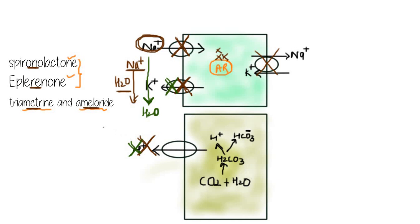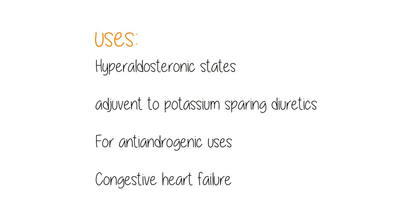Now let's look at the conditions in which potassium sparing diuretics are used. The first and foremost use is as an adjuvant to potassium-losing diuretics. Loop diuretics and thiazide diuretics cause loss of potassium in the urine, so by adding potassium sparing diuretics alongside those drugs, this will prevent the loss of potassium in the urine.